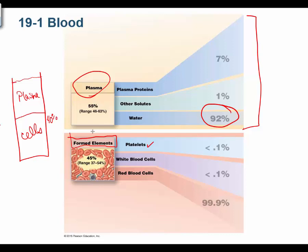Within plasma, water makes up 92% of the volume. The remaining solutes include electrolytes — which are ions, both cations and anions — and plasma proteins. The most important plasma protein to know is albumin, which is the major protein in your plasma.